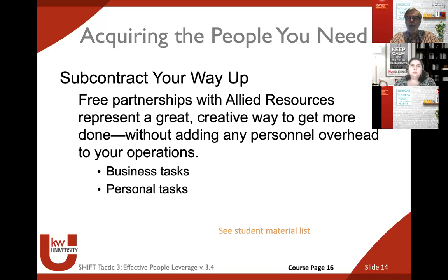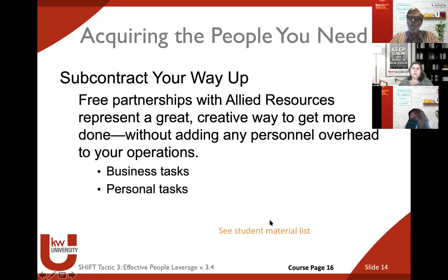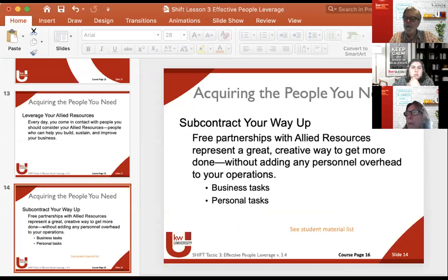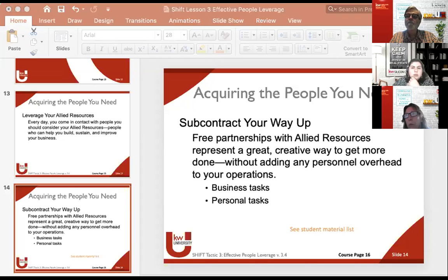For both business tasks and personal tasks, there are a lot of things you can add in that give you a way to acquire an allied resource. If you look in the student materials, there are lists of who those resources might be. Take a look at page 16 in the student manual.